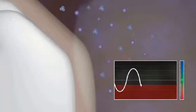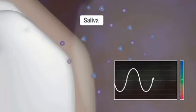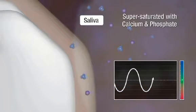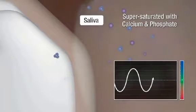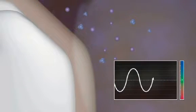The body's natural response to low pH is to deliver saliva, which has an acid-neutralizing pH. Saliva is super-saturated with the calcium and phosphate needed to rebuild teeth. This process is happening constantly in a healthy mouth.